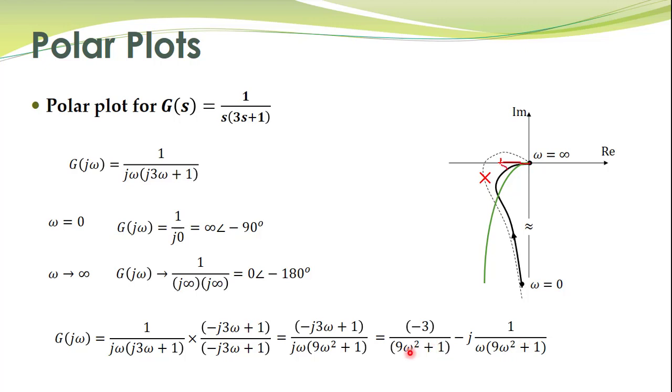And what we can see is that this real part becomes equal to 0 corresponding to omega equal to infinity. And the imaginary part also becomes 0 corresponding to omega equal to infinity. So the crossing is also only for omega equal to infinity. And we have already determined that point. Omega equal to infinity is mapped over here.